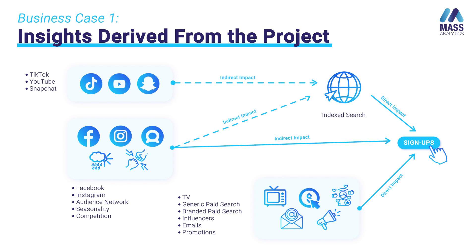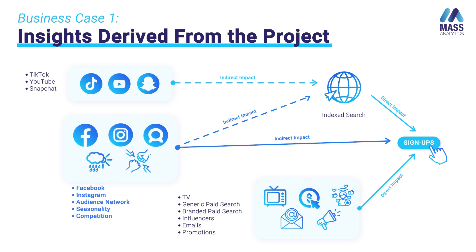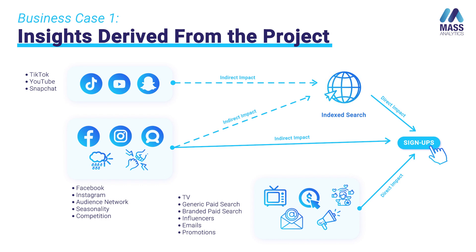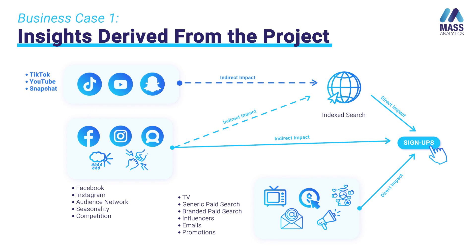However, social media like Facebook, Instagram, and audience network had both an indirect and a direct impact. The indirect impact was described as follows: these social media channels were influencing indexed search, and in turn, indexed search had a direct impact on sign-ups. Other variables like TikTok, YouTube, and Snapchat only had an indirect impact on sign-ups.